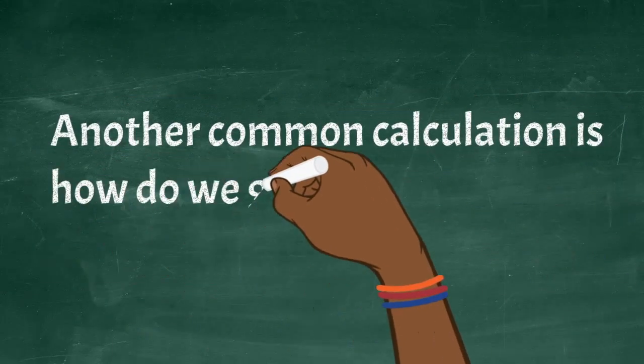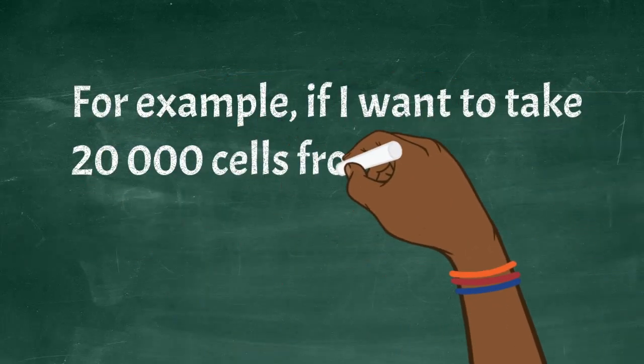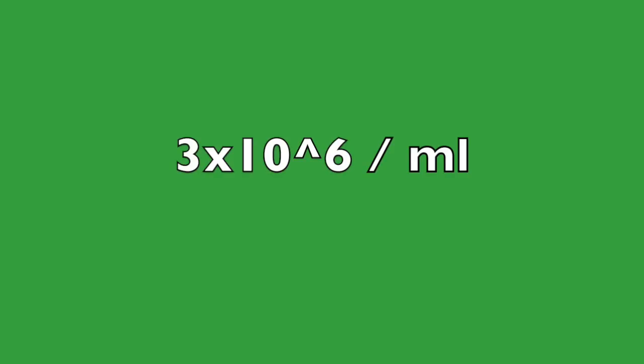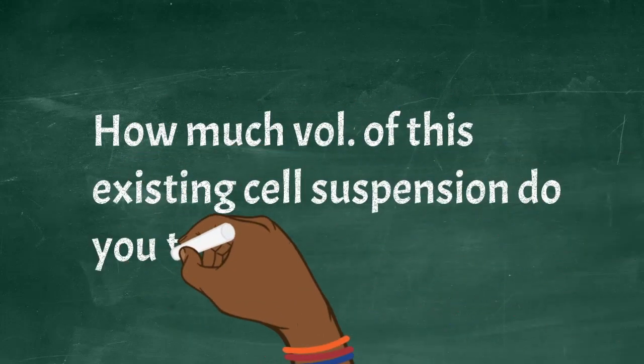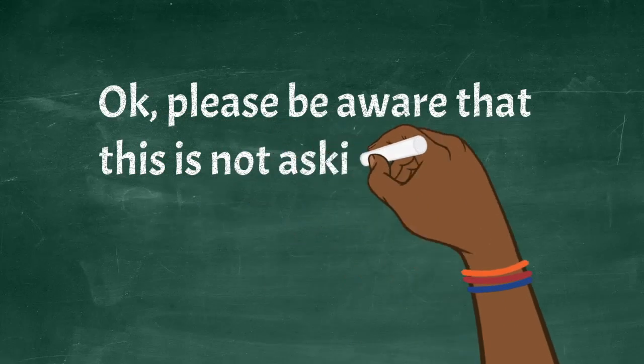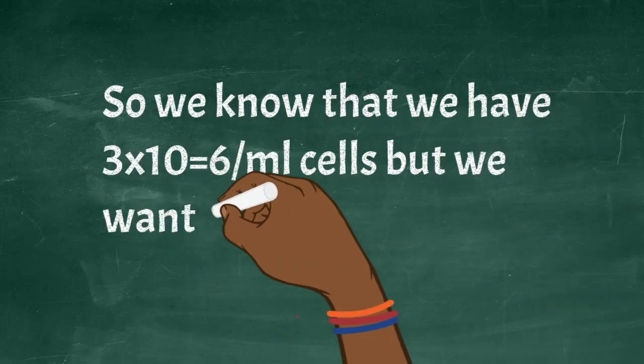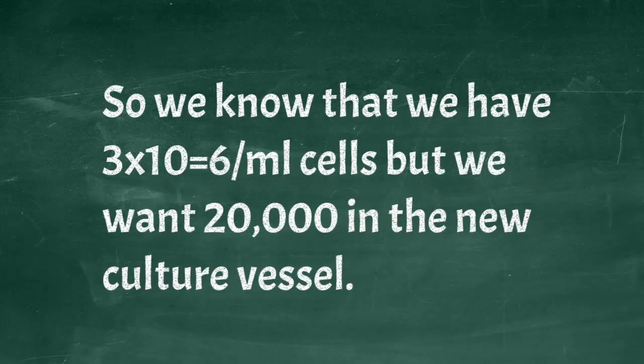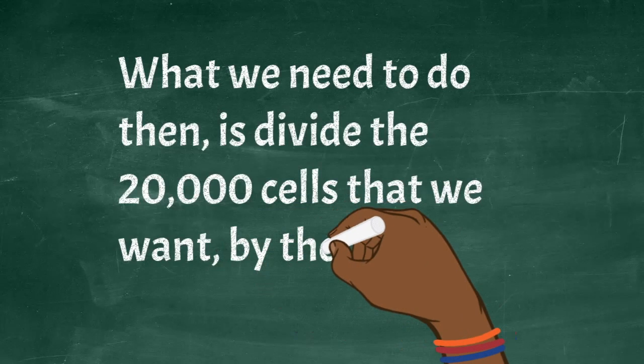Another common calculation is how do we get a certain number of cells? This refers to subculturing or passaging. For example, if I want to take 20,000 cells from my 3 million cells in a flask to subculture into a new flask, how much volume of this existing cell suspension do I take? Please be aware that this is not asking for concentration, that is cells per given volume. It's simply asking for total cells, 20,000 cells.